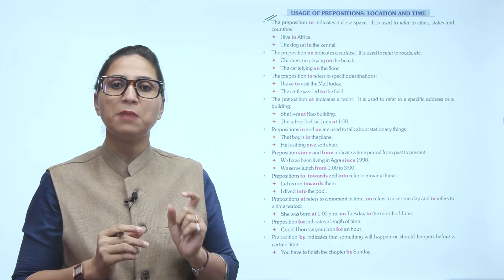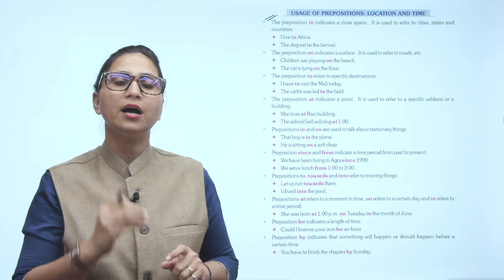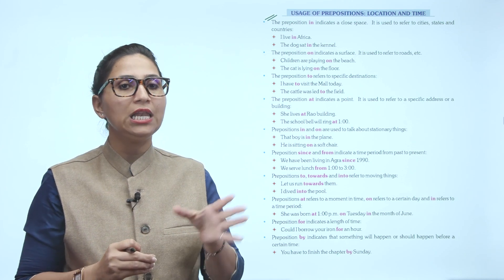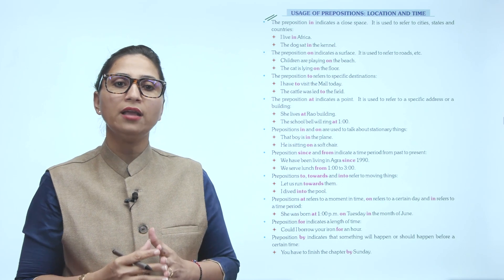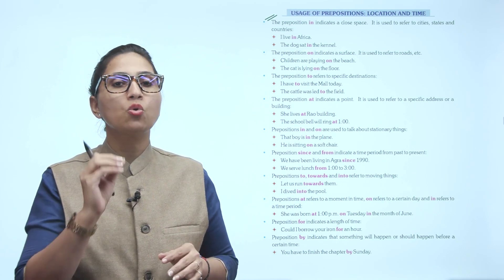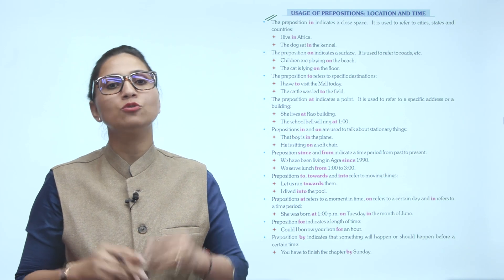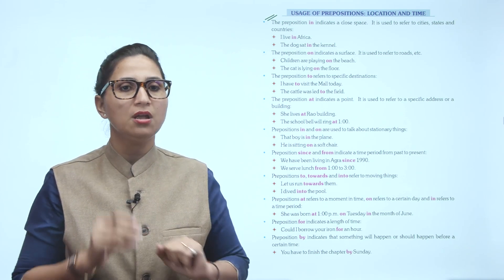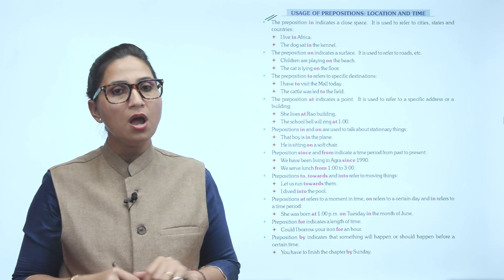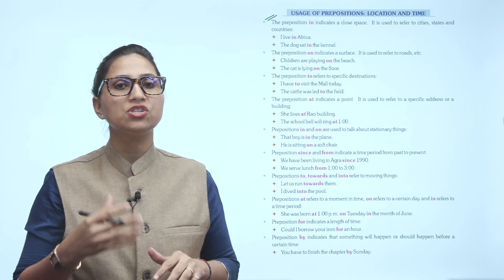The preposition AT indicates a point. It is used to refer to specific addresses or a building. She lives at Rau Building. The school bell will ring at ten, at one. So any specific time here can be indicated using AT.